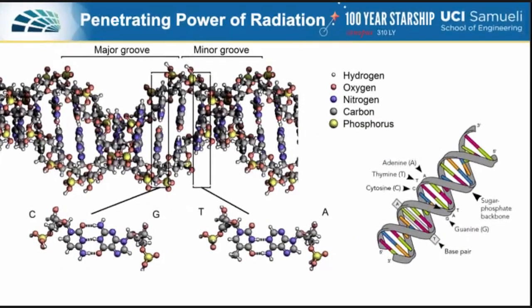Ionizing radiation causes this damage because disrupting electrons interferes with the covalent bonds within the DNA sugar-phosphate backbone. DNA is a complex molecule comprised of base pairs of smaller molecules. The base pairs are connected by hydrogen bonds, and these too can be damaged by ionizing radiation — but fortunately, these hydrogen bonds are easier to repair.